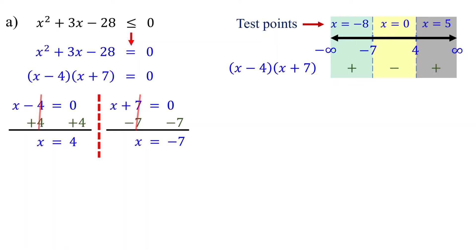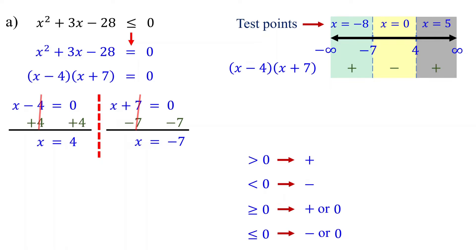The next step is to identify the intervals where the inequality holds true. Remember, when we say an expression is greater than 0, we mean it is positive. Less than 0 means it is negative. Greater than or equal to 0 means it is either positive or 0. Less than or equal to 0 means it is either negative or 0. In our case, the inequality is less than or equal to 0. So, we need to identify intervals where the quadratic expression is either negative or 0. It is negative when x is between negative 7 and 4, and it is 0 when x equals negative 7 and 4. Therefore, the inequality holds true for any value of x between and including negative 7 and 4.